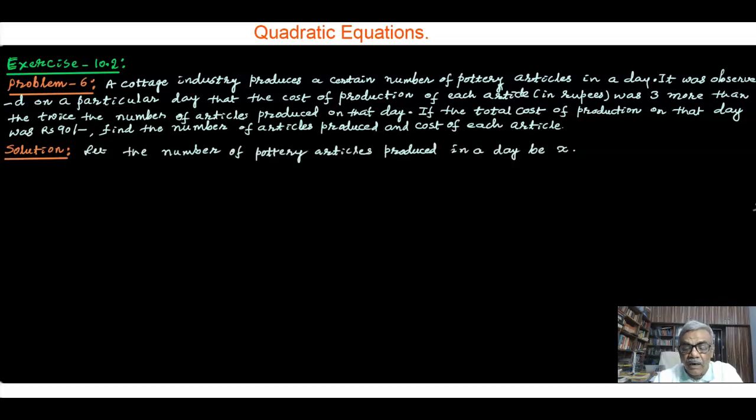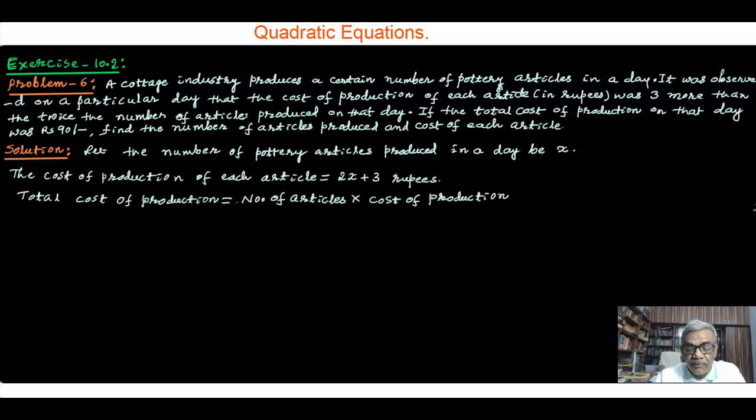Now the solution. Let the number of pottery articles produced in a day be x. x articles are produced. And cost of production of each article is three more than twice the number of articles. That is 2x plus 3 rupees. And total cost of production equal to number of articles into cost of production. Therefore, that total cost was 90 rupees, 90 into number of articles x, and the cost of each product is 2x plus 3.